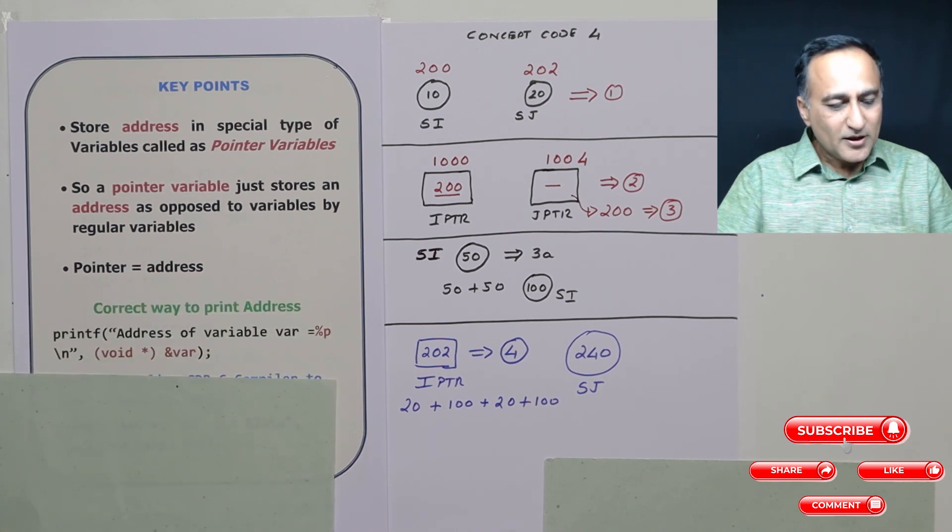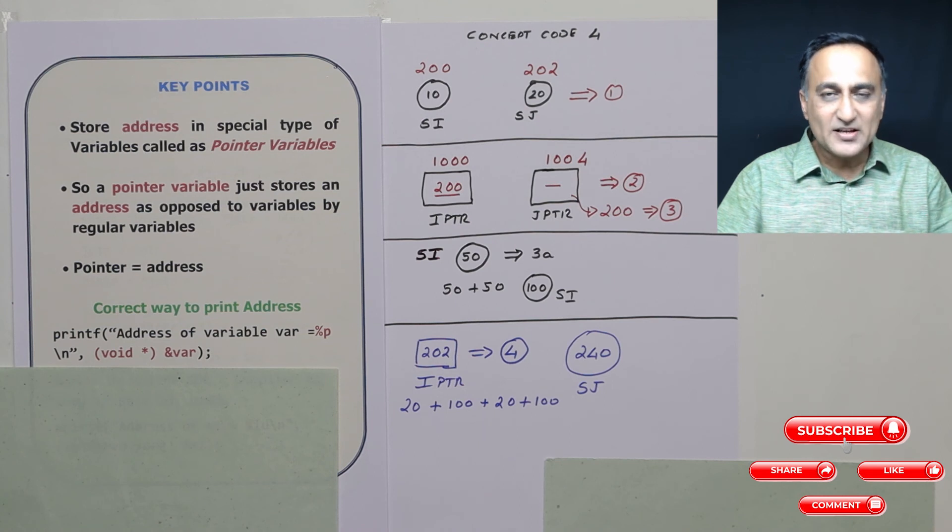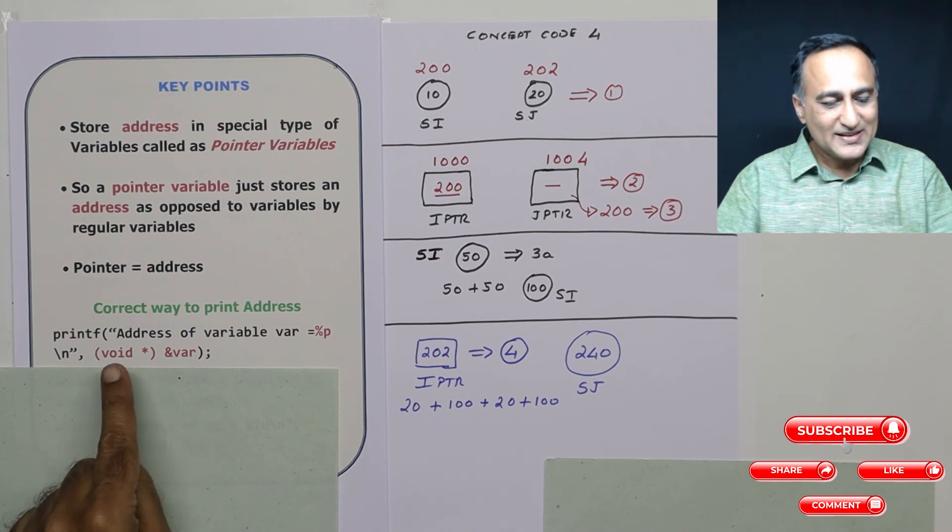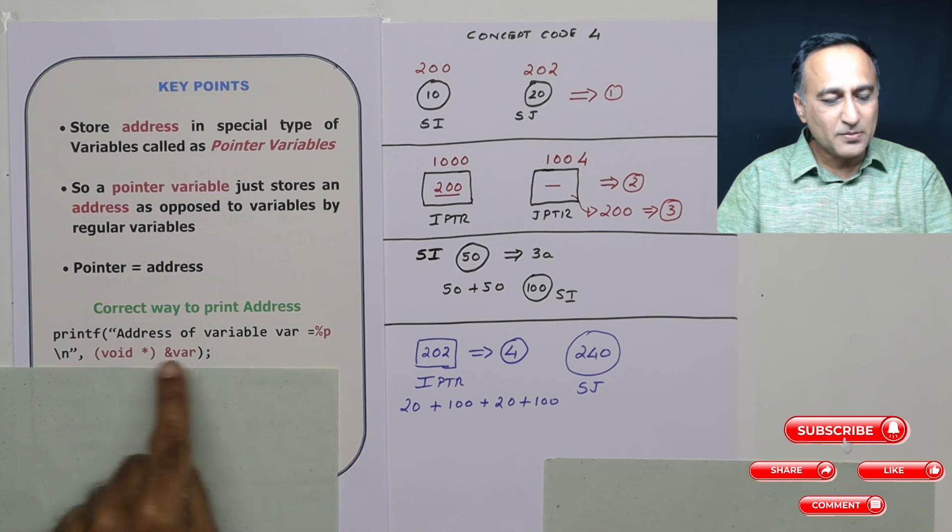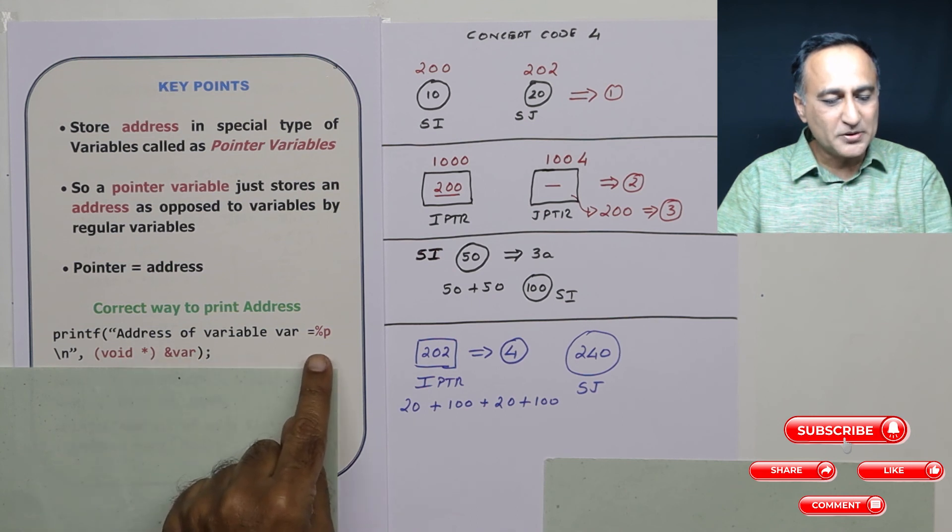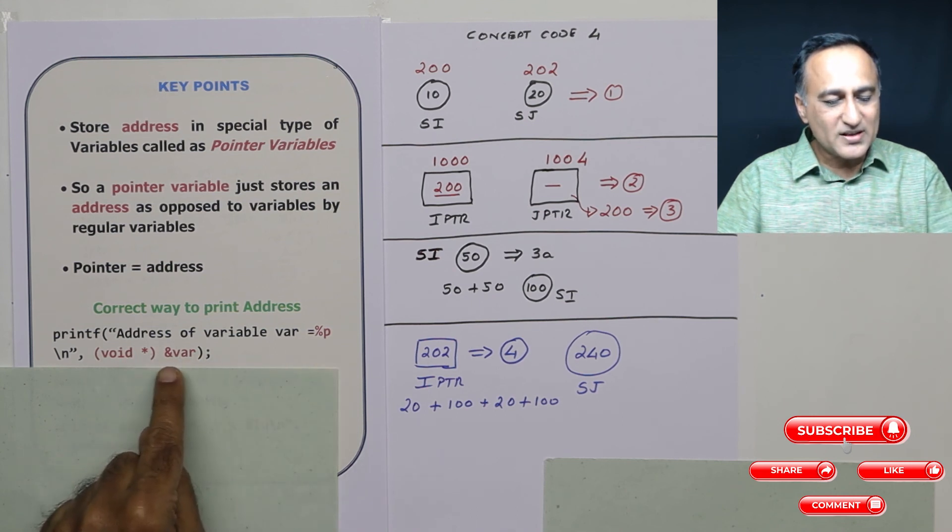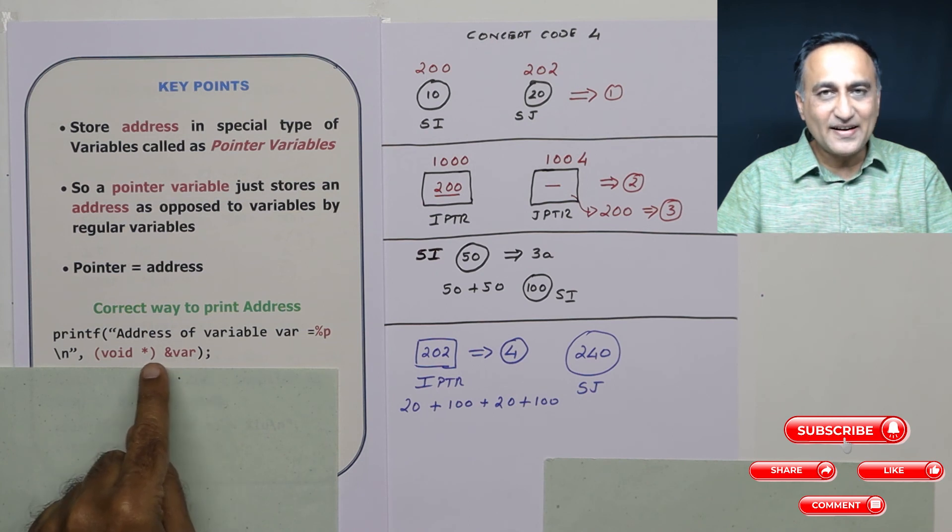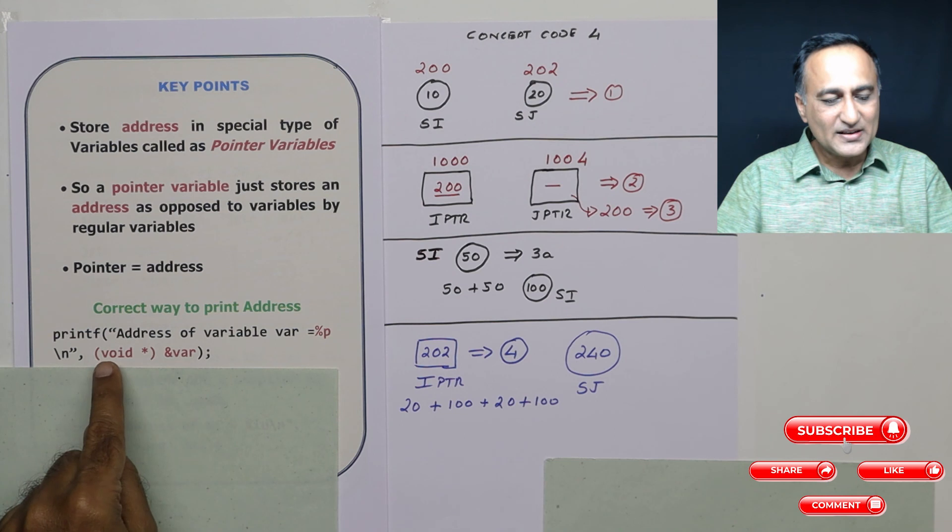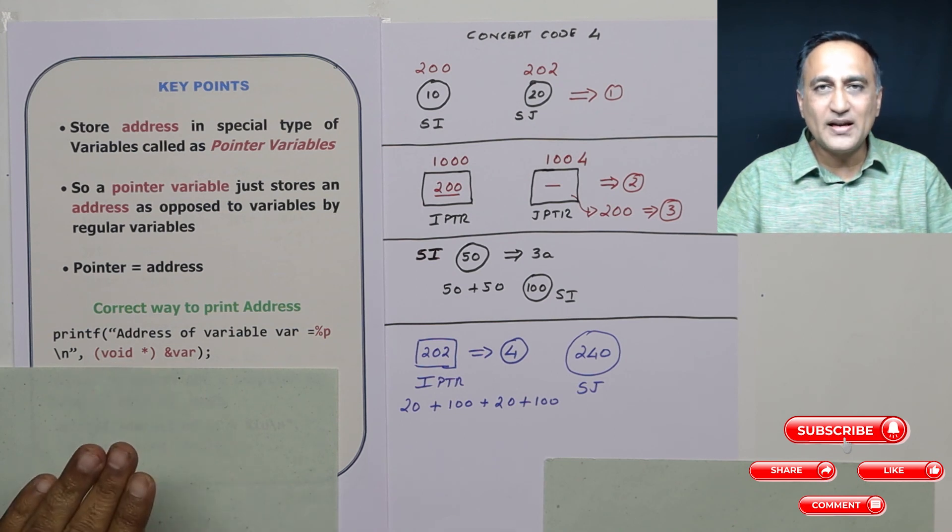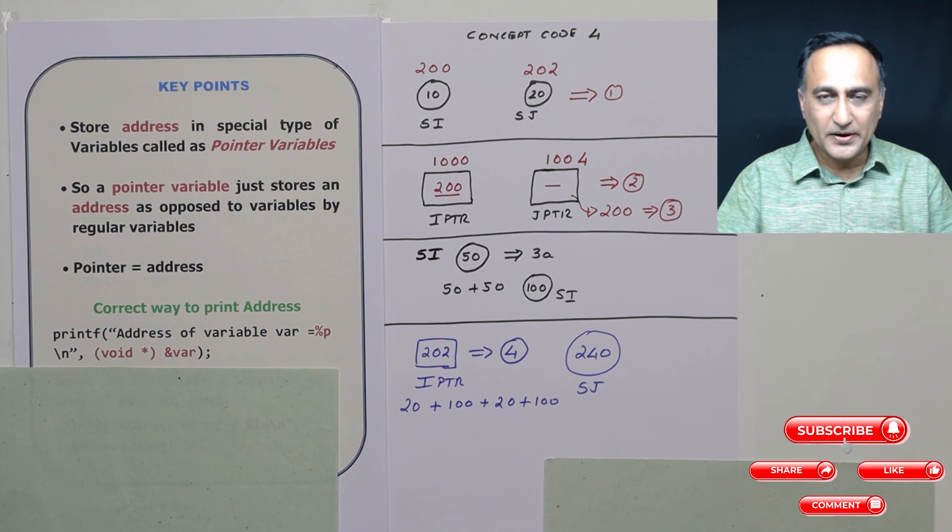Now, if you are writing a C program and you want to print the address of any variable, this is the correct way of printing the variable address of variable is equal to percentage p. Whatever is the data type, suppose var is integer, it will return an address to an integer type of variable. This ampersand will make it a normal variable address of a memory and you will get the address printed.